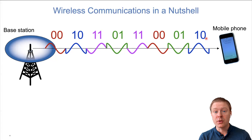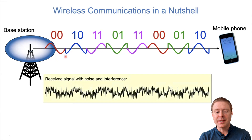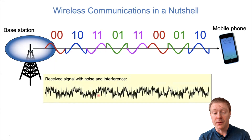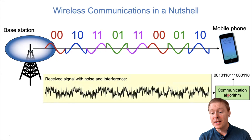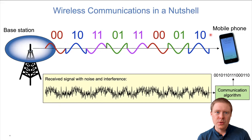The challenge is that what you receive doesn't look as clean as what was sent. In addition to the signal that ideally looks a certain way when it leaves the transmitter, when it reaches the receiver there is a lot of noise and possibly interference from other systems added on top. The challenge in wireless is to design communication algorithms that allow us to take a noisy signal and map it back to the original sequence of zeros and ones.